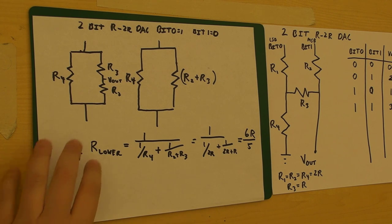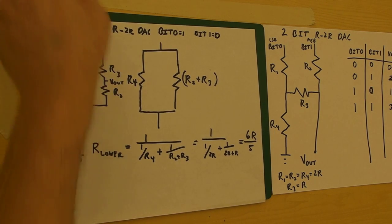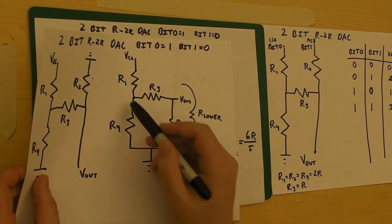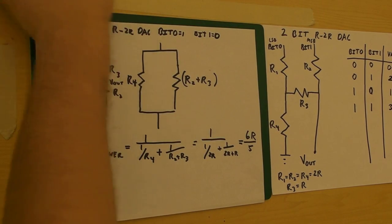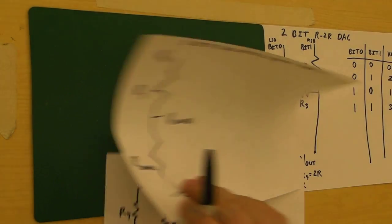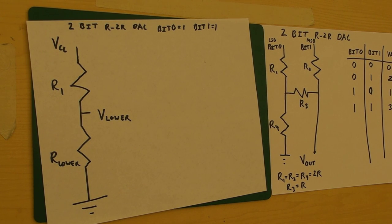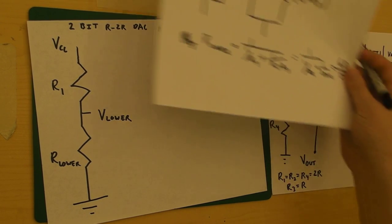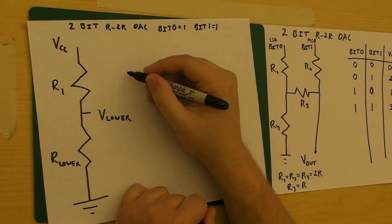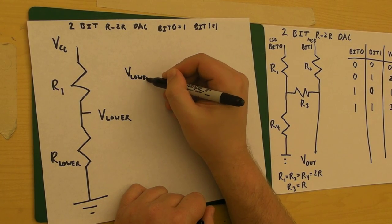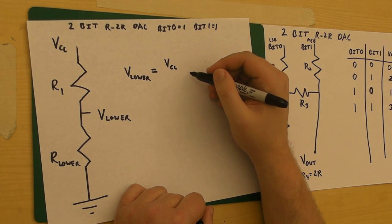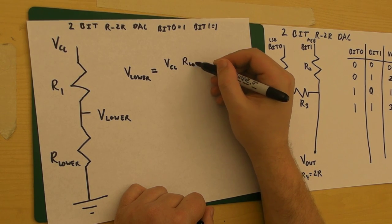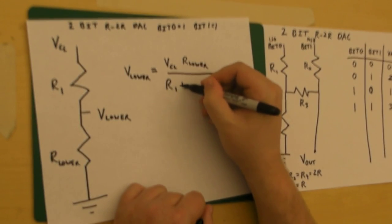So now, we know what this value should be. But we still need to find out what the voltage is at this point, not just the resistance of this bottom circuit. So fortunately for us, this now just looks like a normal voltage divider. That's very convenient. So I know that V lower is going to equal VCC in this case times R lower over R1 plus R lower.